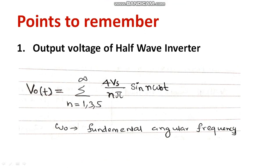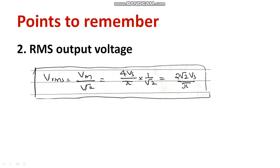Why does the summation start at n = 1, 3, 5? Because we consider only odd harmonics. Due to symmetry, even harmonics cancel each other. Vs is the RMS voltage. You can expand the series and calculate. ω₀t is the fundamental angular frequency. To calculate the RMS value, divide the peak value by the square root of 2.